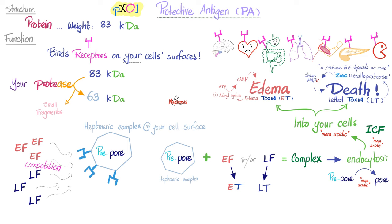How about the lethal factor? Lethal factor is a zinc metalloprotease — meaning it's a protease, an enzyme that breaks down protein, that requires zinc as a metal cofactor. This zinc metalloprotease, known as the lethal toxin, will cleave MAPK — mitogen-activated protein kinase — which causes cell death by a not fully understood mechanism.